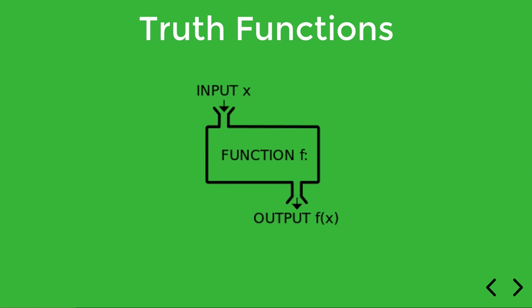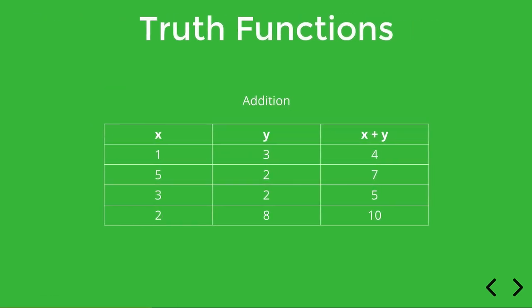For instance, addition is a function which takes two integers as inputs and returns one integer, the sum, as the output. Without knowing exactly how this factory works or how the computation is performed, we can describe the addition function by describing its inputs and outputs. So that's what we've done at least partially in this table here. You can describe a function by producing a table that shows what outputs you get based on a given input.